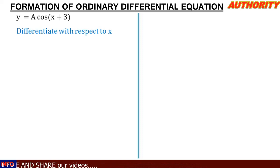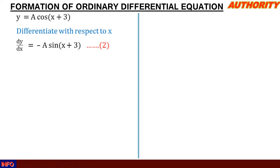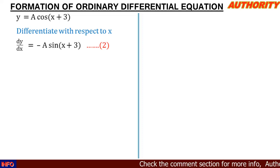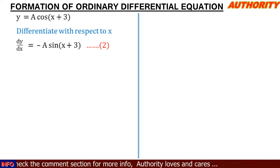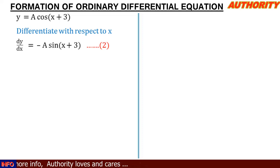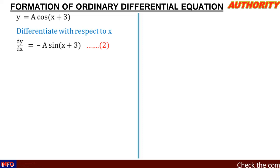Let's call the original function equation 1. Now we differentiate for the first time. Differentiating y with respect to x: since 'a' is a constant, differentiating a·cos(x+3) gives dy/dx = −a·sin(x+3). Let's call this equation 2.